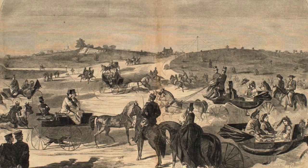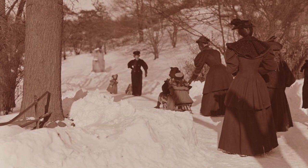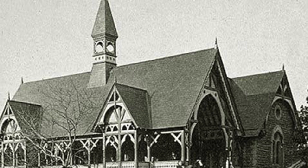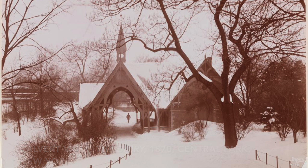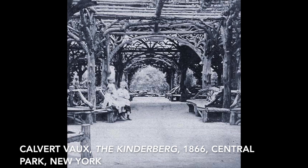Soon after Central Park was opened in the 1860s, it was criticized by local newspapers for its lack of facilities for children and their caregivers. The commissioners responded by creating a children's district in the southern part of the park, which included structures such as the Dairy and the Kinderberg. However, many of these rustic architecture structures only helped to satisfy adults' needs for a nice place to rest with their kids, rather than an area that actively engaged children.